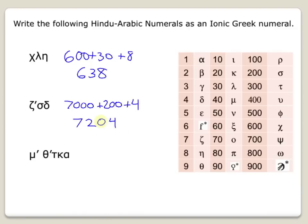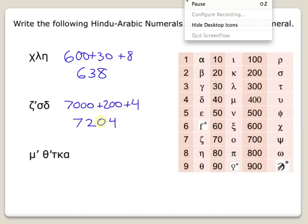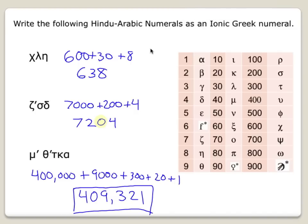Alright, I want you to try this next one on your own. Go ahead and pause the video. Come on back when you're done. Alright, how'd you do? So this was the symbol for 400 times 1,000, so 400,000. Here's a 9 times 1,000, so 9,000. And then 321. So 409,321.